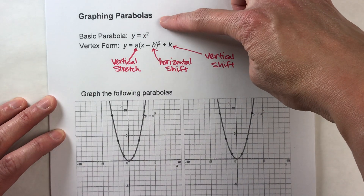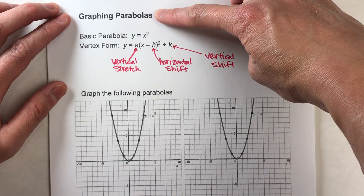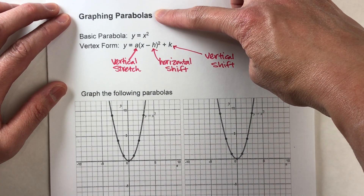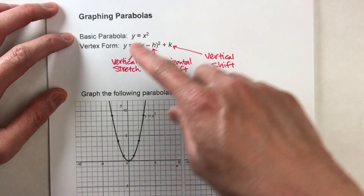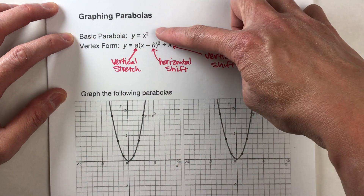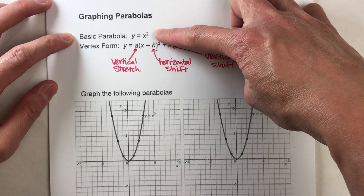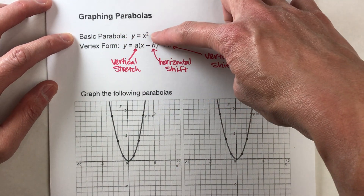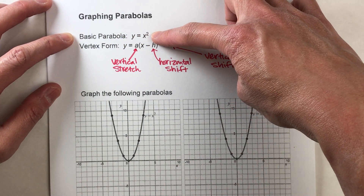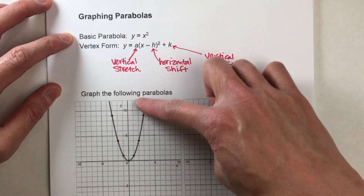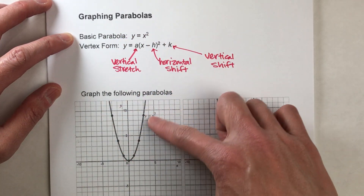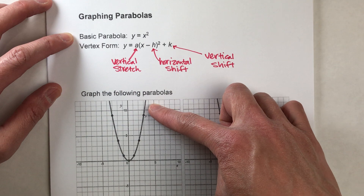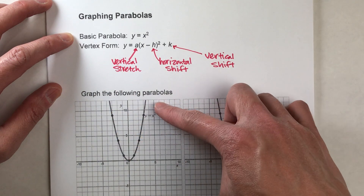Today we're going to be graphing parabolas. Before we start, we need to know that the basic parabola has the equation y equals x squared. And that's what this graph is right here — the basic parabola y equals x squared.